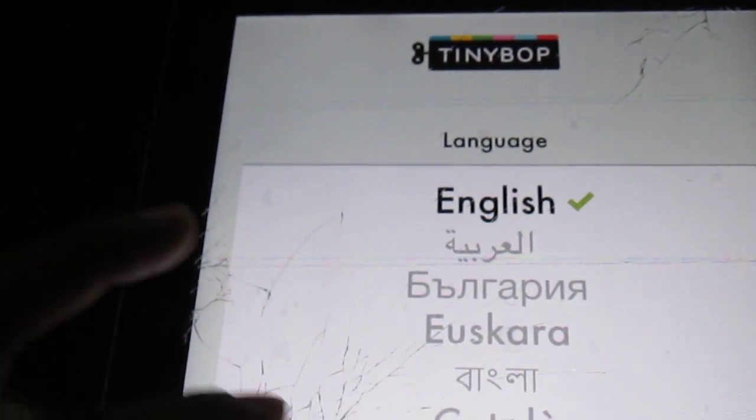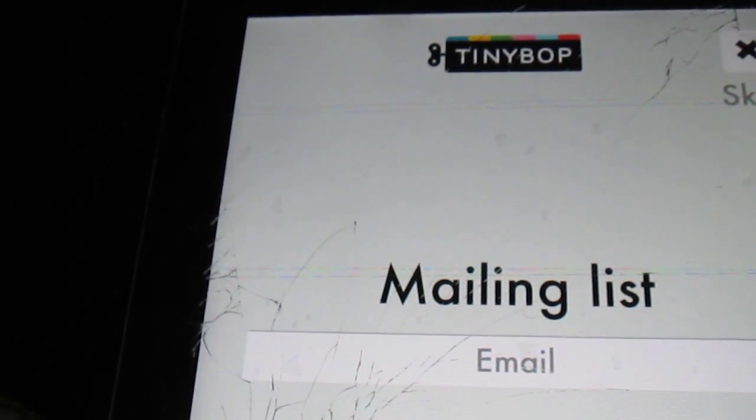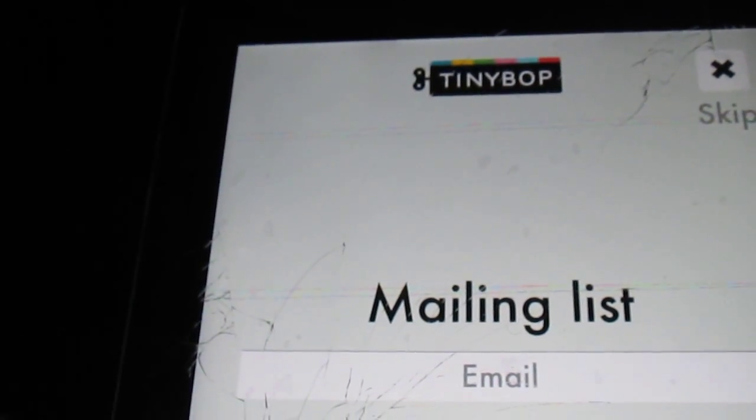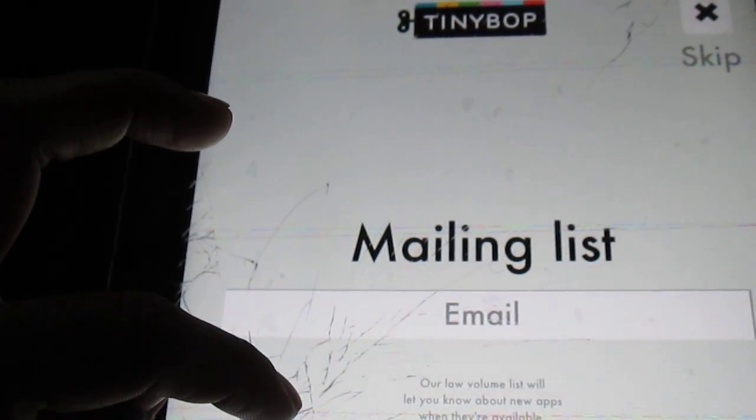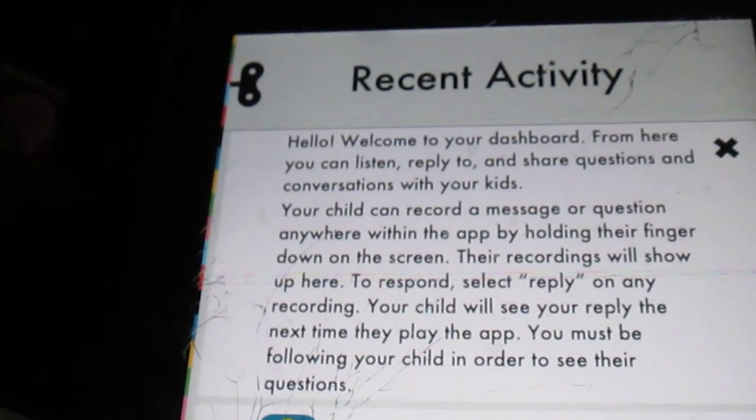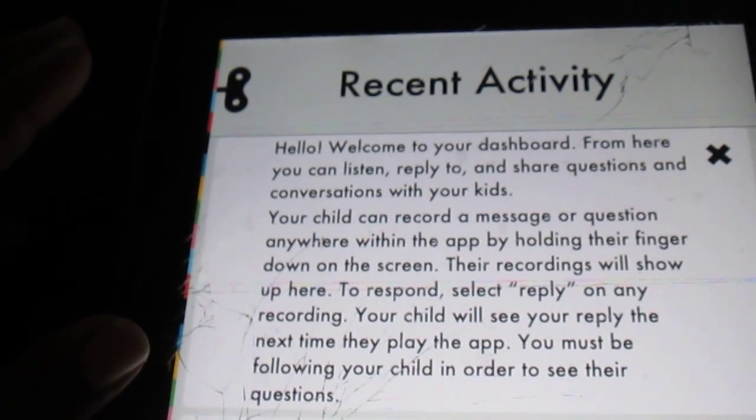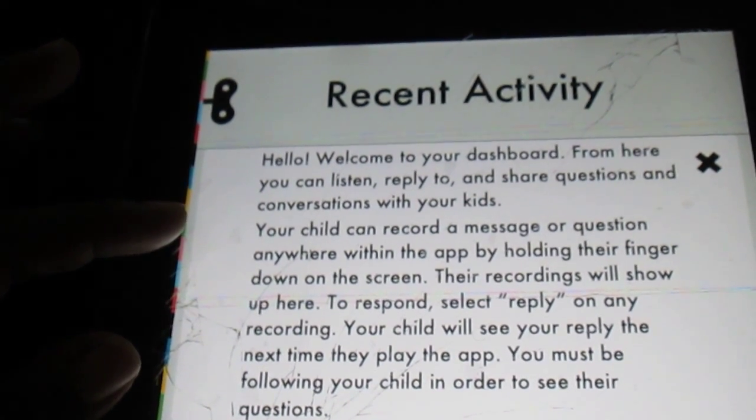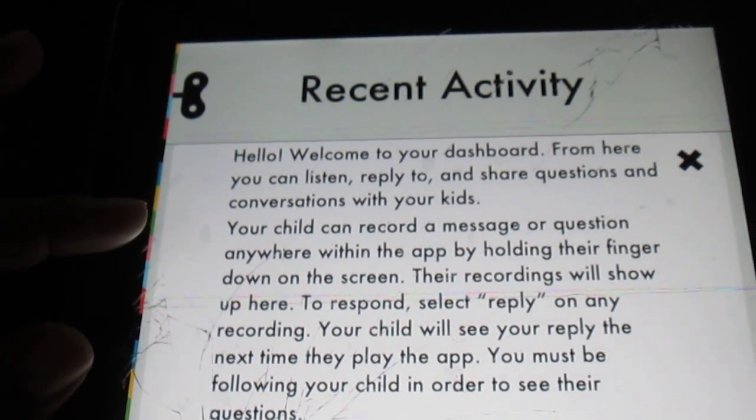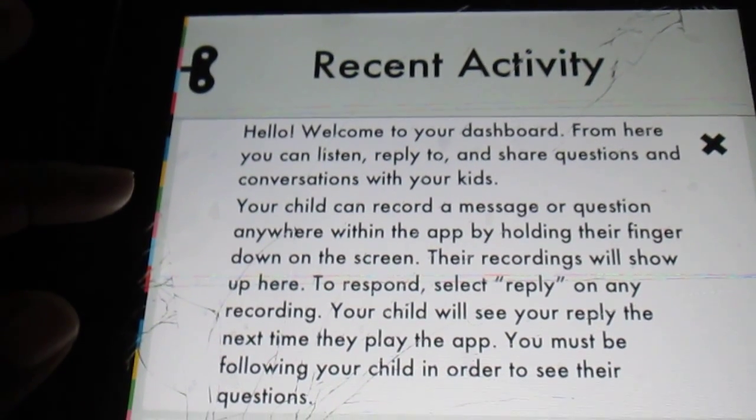So I'm going to follow this child in English, of course. And I guess they can send me emails. I'm not going to do all that because there's no real point at this stage. So their list just lets you know about the new apps that they have. So that's pretty much the extent of that. And then here you have welcome to your dashboard. You can listen to, reply to, and share questions and conversations with your children. Your child can record a message or question anywhere within the app by holding their finger down on the screen. Their recordings will show up here.